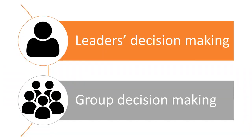Welcome to the class of Psychological Aspects of Leadership. In this class, we will learn many heuristics and biases in leaders' decision making. We will learn how to make decisions as an individual. We will also learn how to make good group decisions. We all know that shared decision making is important, and we will focus on how shared decision making can go horribly wrong.